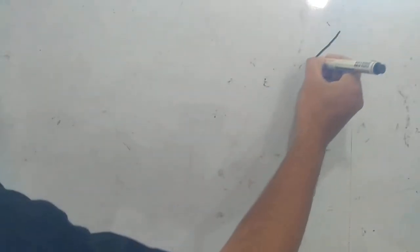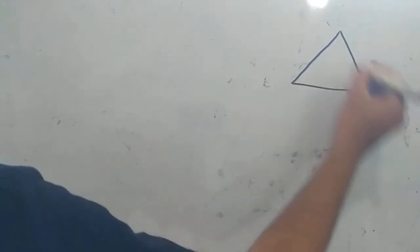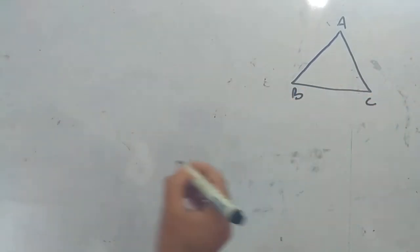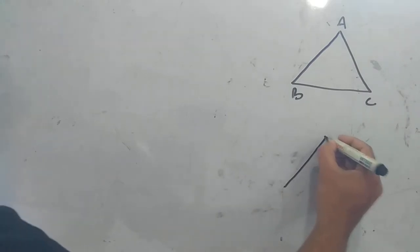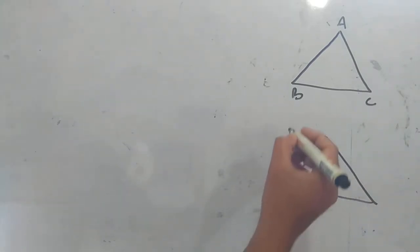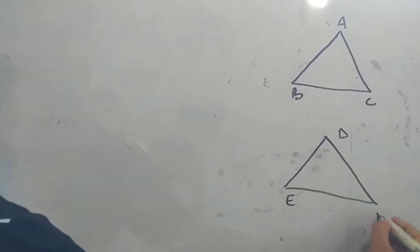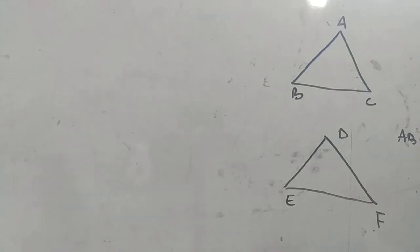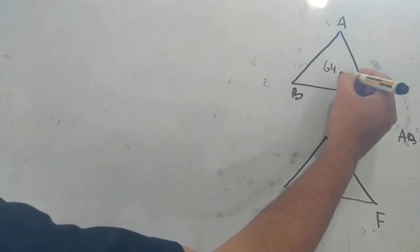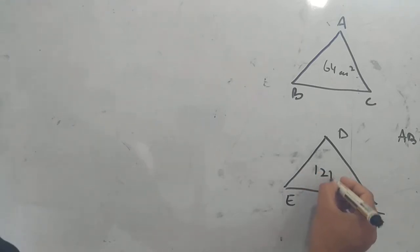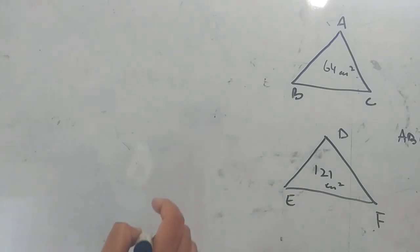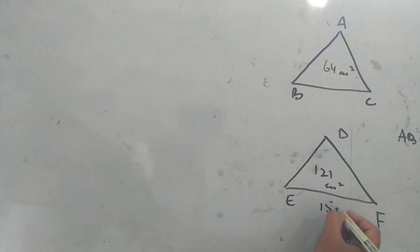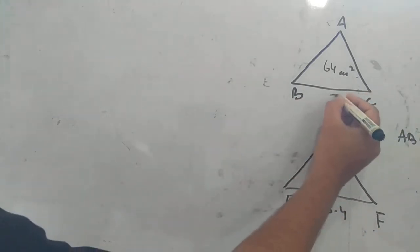Now, the first exercise — question number one of exercise 6.4. The question is: let triangle ABC be similar to triangle DEF. It is given that these two triangles are similar. Their areas are 64 cm² and 121 cm². If EF is equal to 15.4, find BC — we have to find the length of side BC.